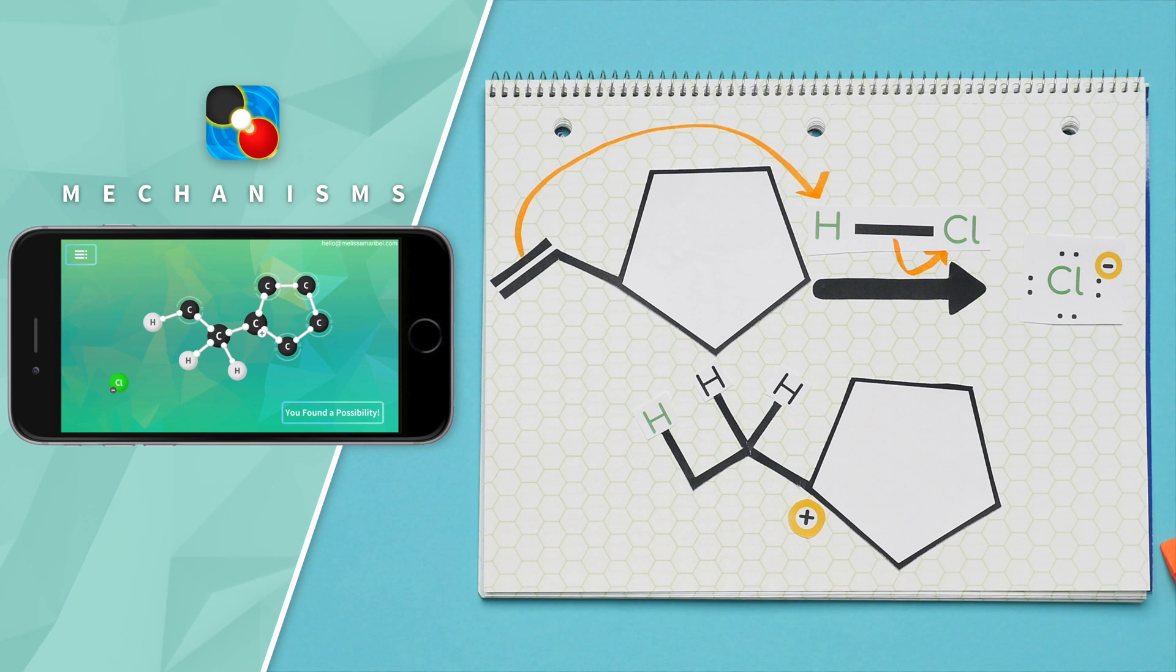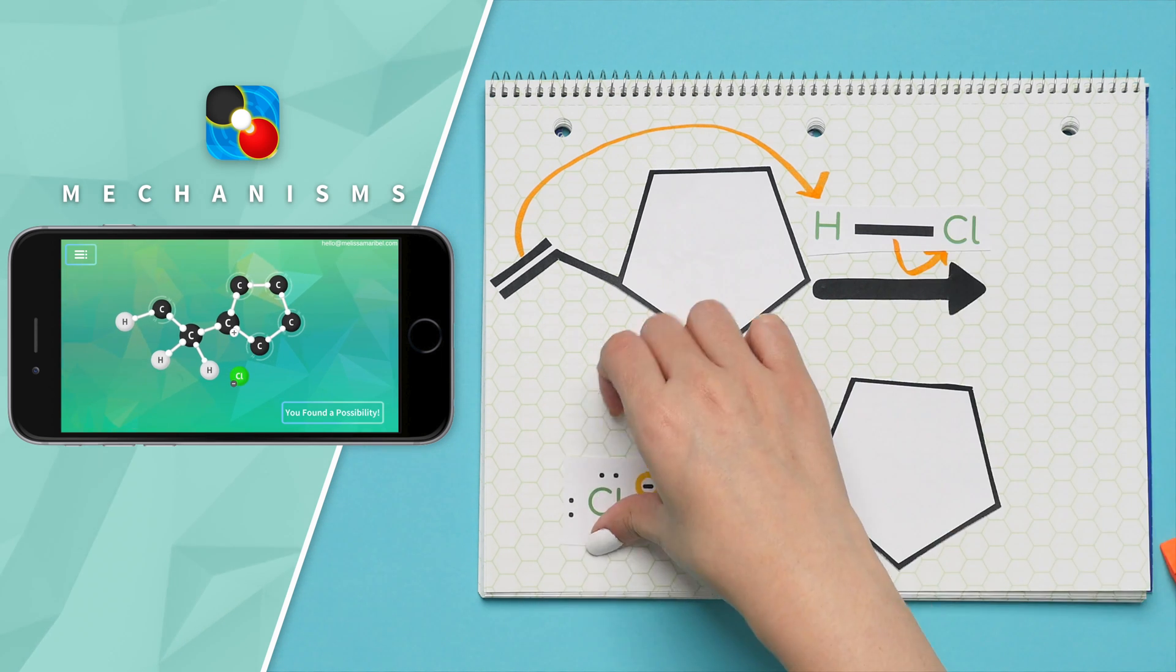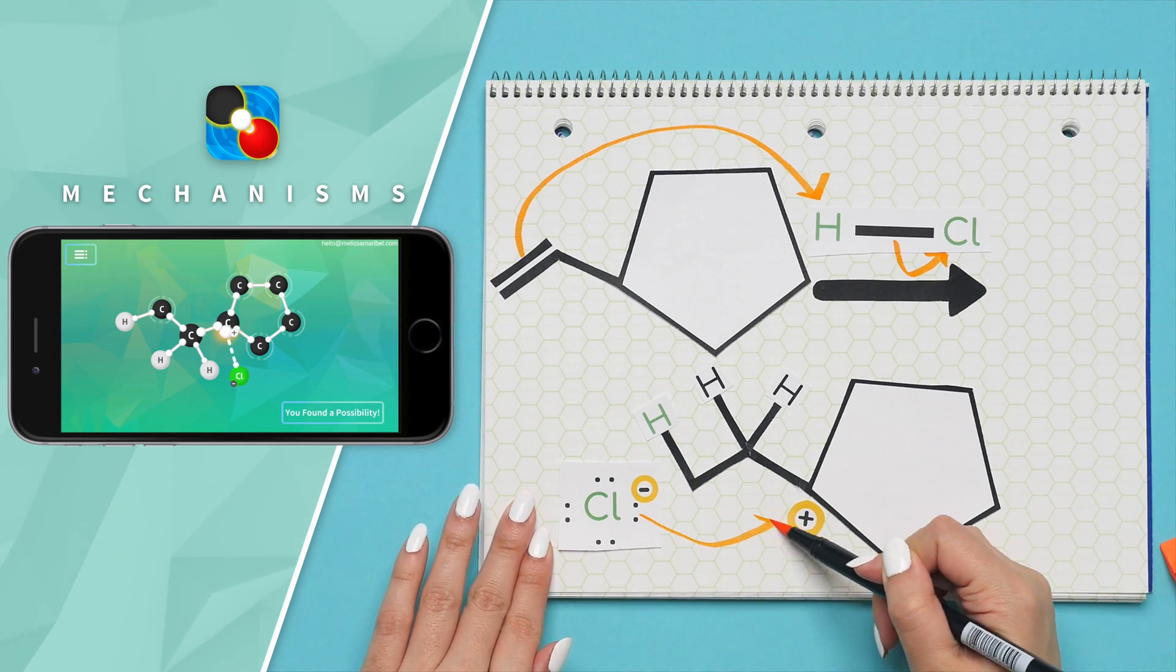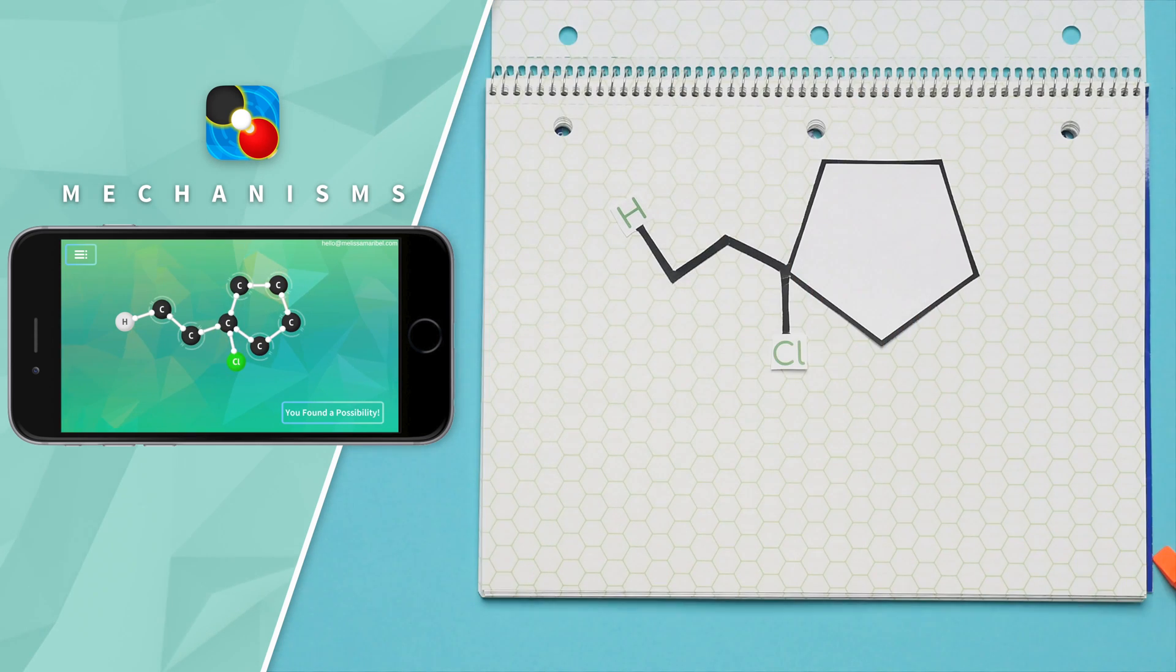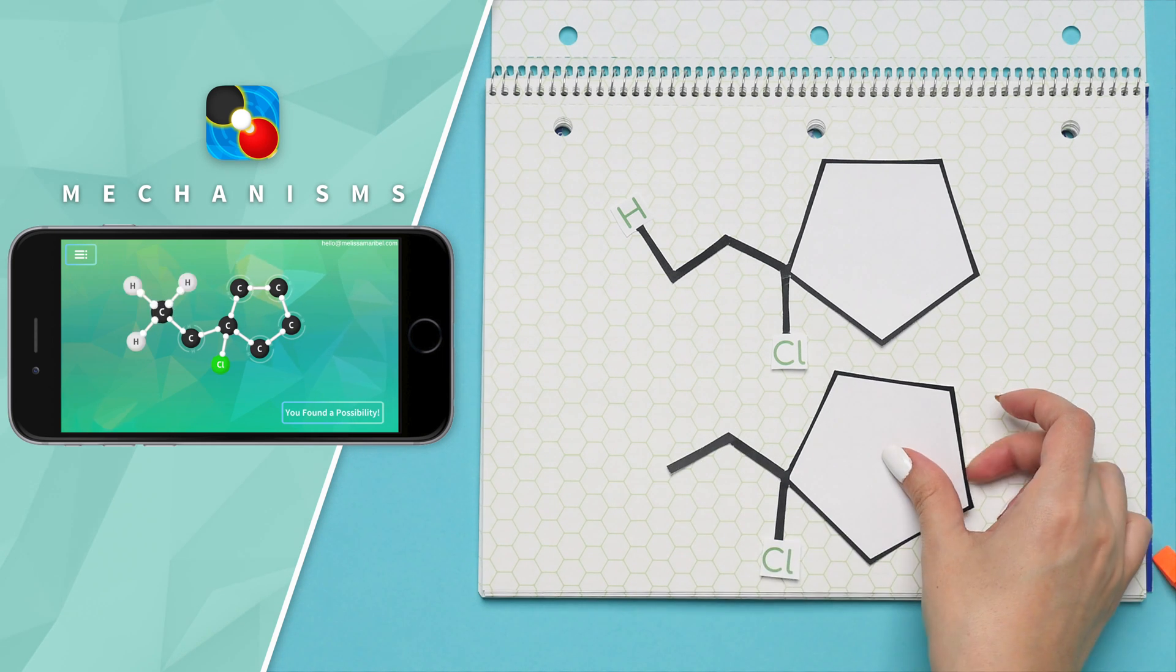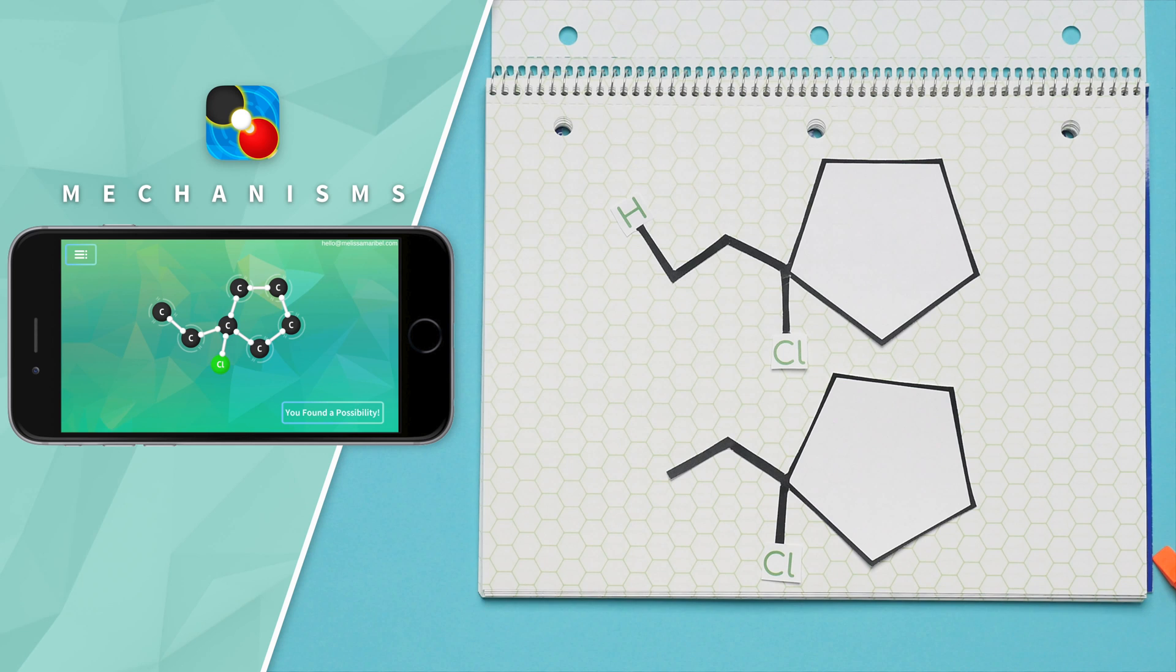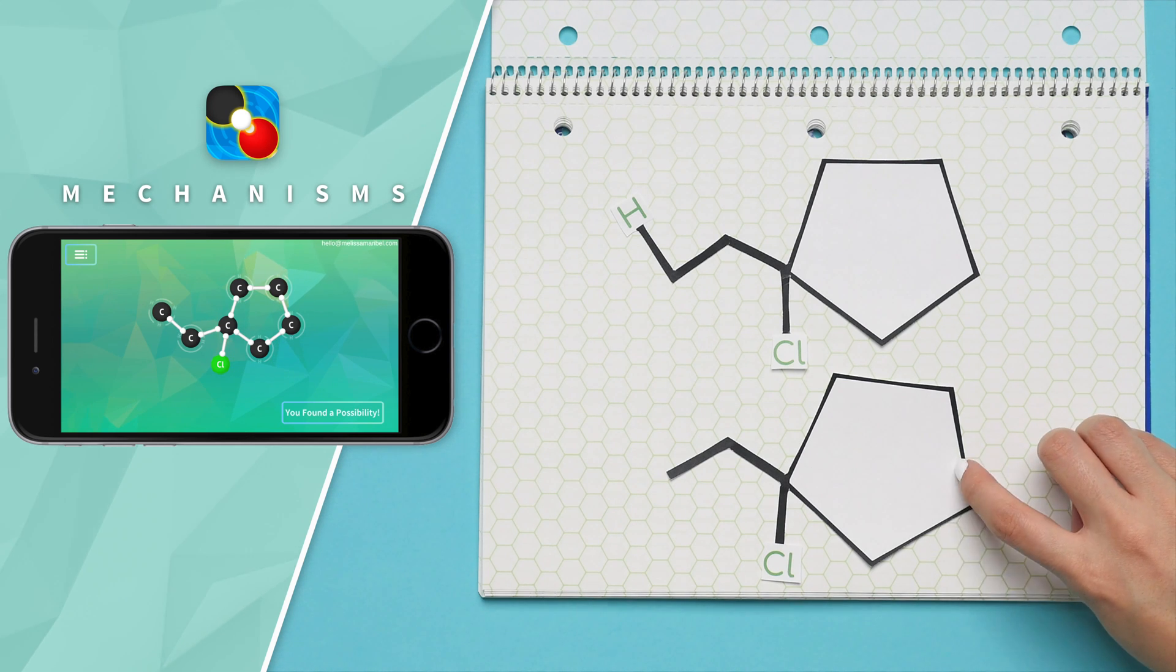Now that we have the most stable carbocation, the second step is to have our nucleophile of chlorine attack the carbocation. Here's our product with the hydrogen we attached during the first step of protonation, and this is what it would look like if we didn't show the hydrogens. For the final product, you typically do not show the hydrogens.